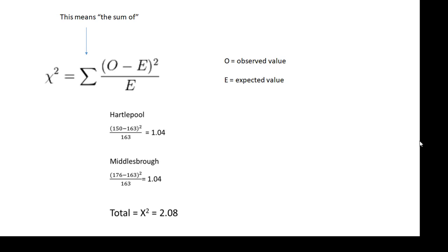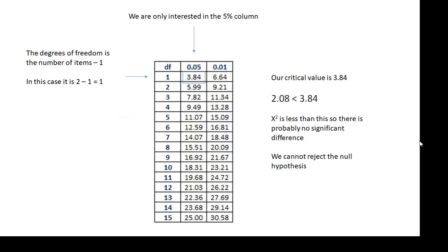What's our critical value? We look it up in a table — here is the table, and you'll be given it if you need it. We're only interested in the 5% column, since we're working at 95% confidence. The degrees of freedom — don't worry too much about this — it's the number of items minus 1. So if there are 2 items, there's 1 degree of freedom; if there were 3 items, there would be 2, and so on. Usually there are just 2 items, so the degrees of freedom is 1, and that means our critical value is 3.84.